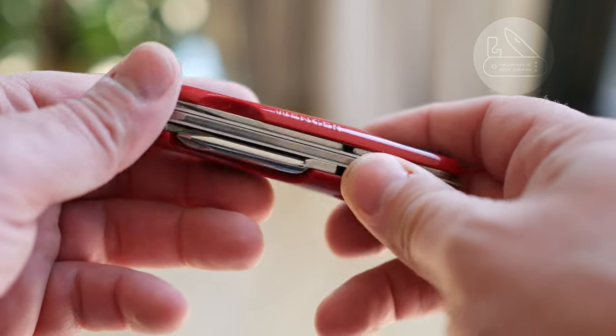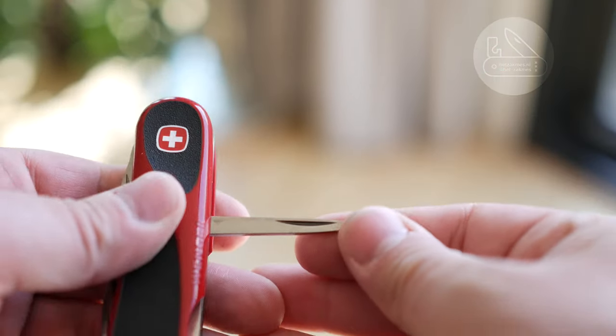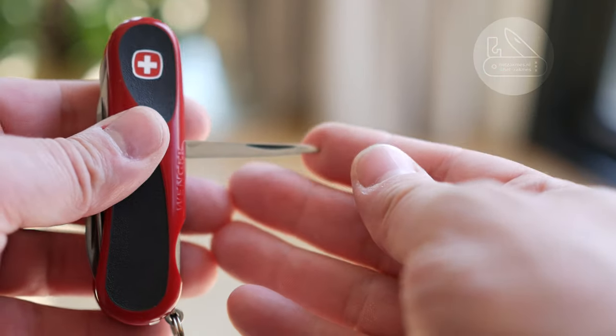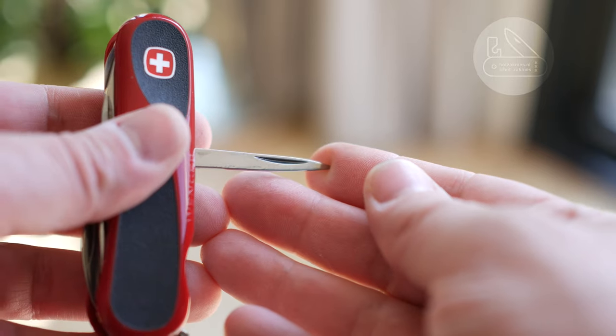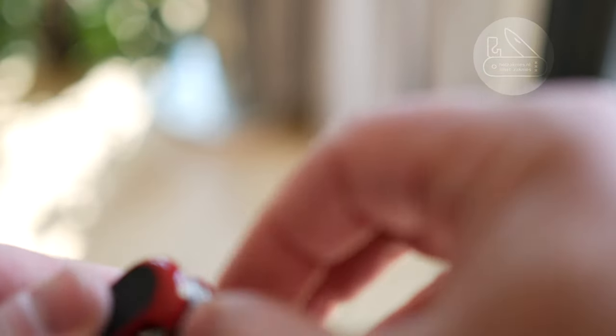And of course, final detail or final tool, which is the awl. And the Victorinox has a different awl. And you can see that in the scale because the scales got a little indent to reach the awl.